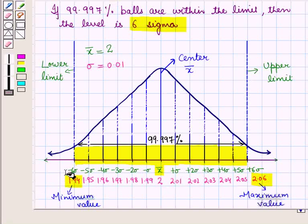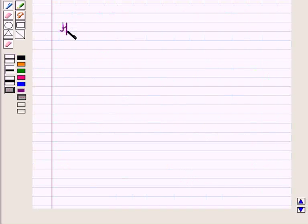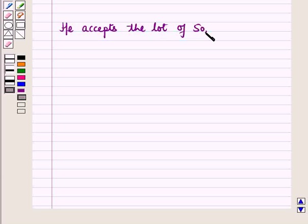From the graph, we see that most of the values are within the required limits and very few values are outside the required limit. So he accepts the lot of 50,000 balls produced by the company.